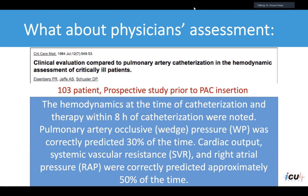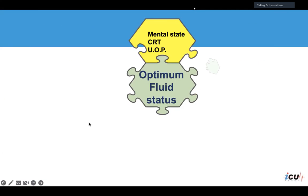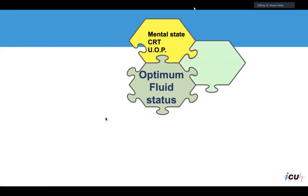Many people cast doubt on the physician's ability to assess hemodynamics. An old study from the days of the pulmonary artery catheter found that doctors were not good at predicting volume status — half of the doctors got it wrong when assessing volume status before receiving PA catheter results.